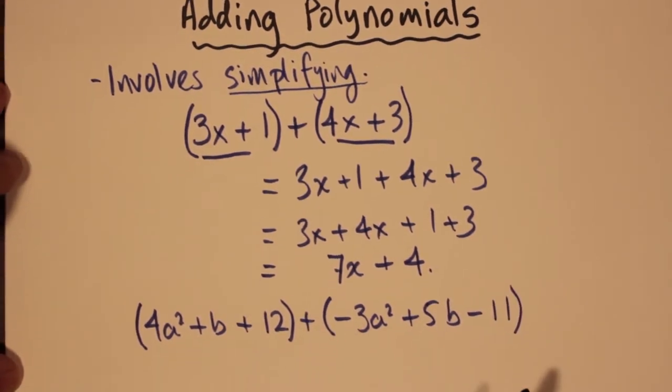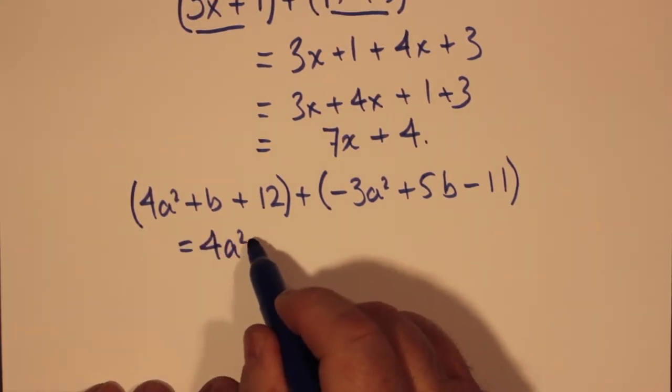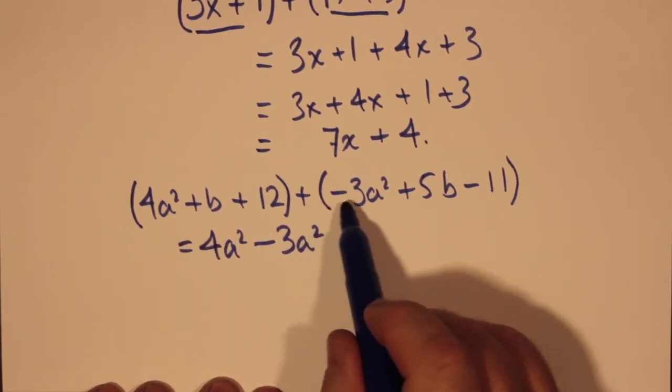So when we remove all the brackets, once again, not a lot happens except that we notice that the minus is in front of the 3a squared.